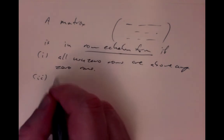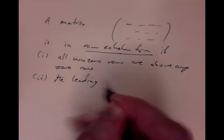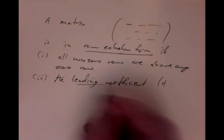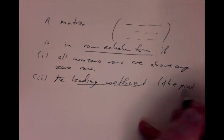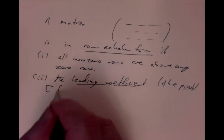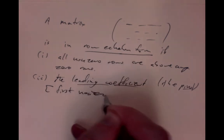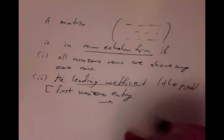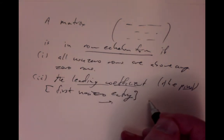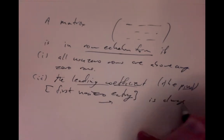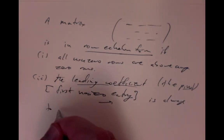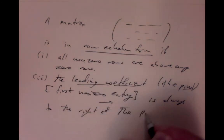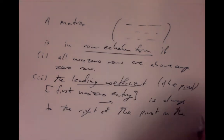The second condition is that the leading coefficient, which is also called the pivot — the leading coefficient is also called the pivot — and that's the first non-zero entry, first as measured from the left going over, is always to the right of the pivot in the row above it.